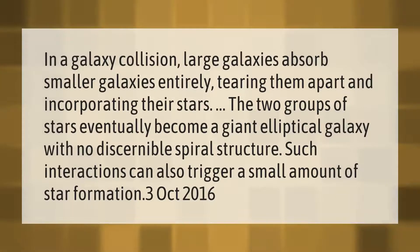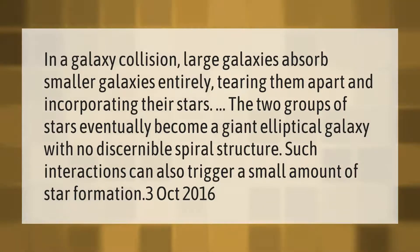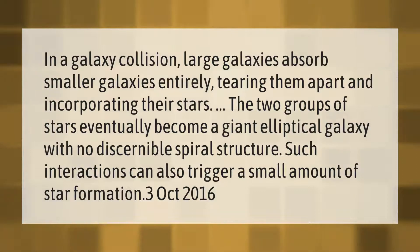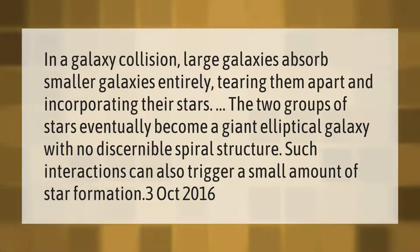In a galaxy collision, large galaxies absorb smaller galaxies entirely, tearing them apart and incorporating their stars. The two groups of stars eventually become a giant elliptical galaxy with no discernible spiral structure. Such interactions can also trigger a small amount of star formation.